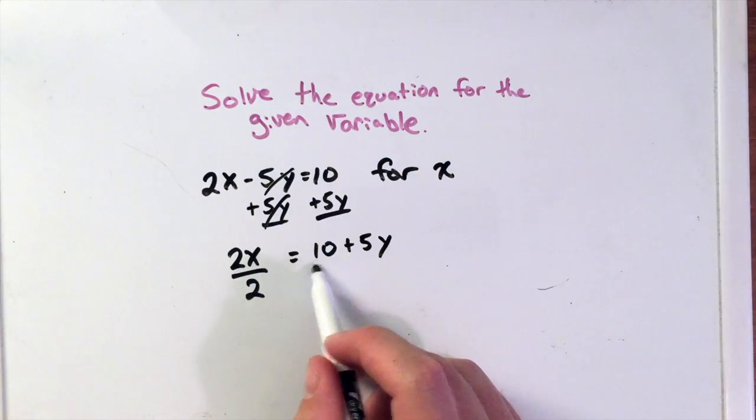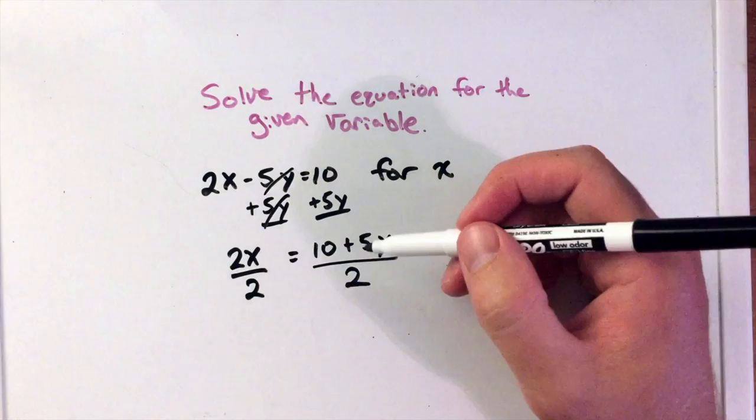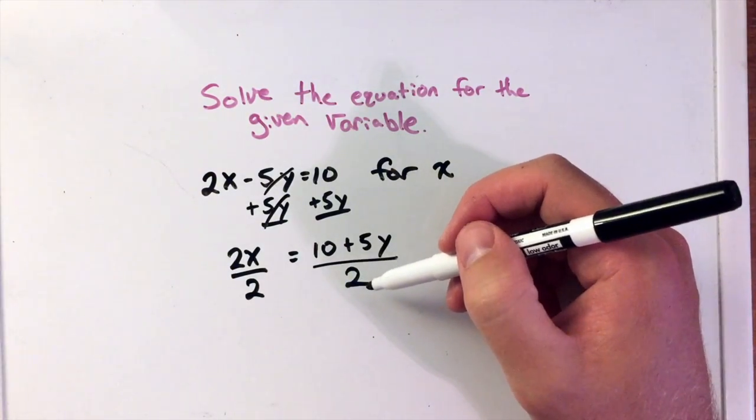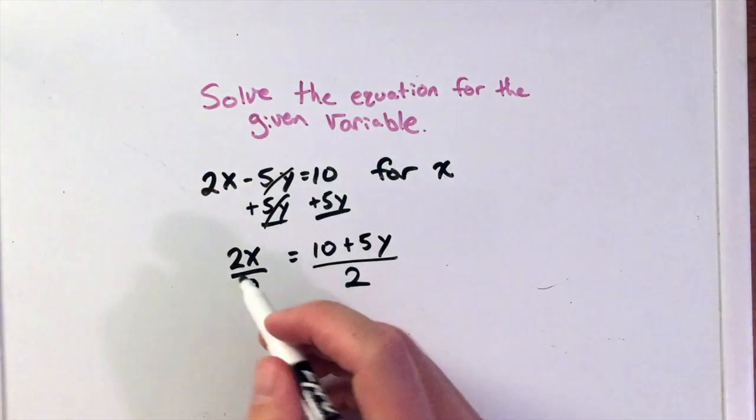Now, make sure you're dividing everything by 2 to the right, the whole right side of the equation. That's a common mistake. A lot of times, I see students just divide the 10 by 2. You want to do the 10 and the 5 both by 2. So this cancels out.